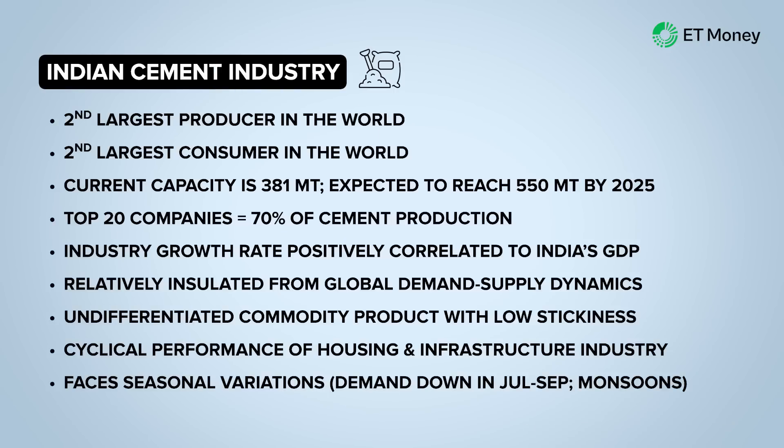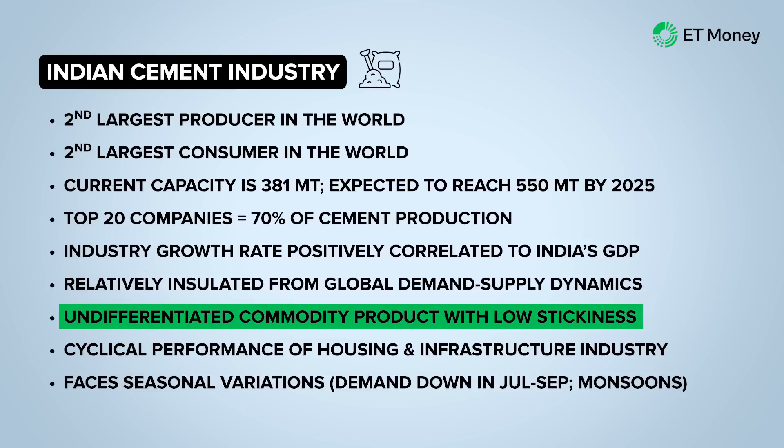Let's take another example and build an investment thesis around the cement sector. On a macro basis, India is the world's second-largest producer and consumer of cement; the industry is positively correlated to the country's GDP and expected to grow 9–10% over the next four years. A key single point in the thesis: cement is an undifferentiated commodity product with low stickiness — meaning the end user cares about one thing only: price. This means the lowest-cost producer effectively decides the market price, making cost competitiveness the most important bullet point.